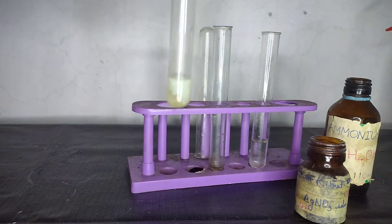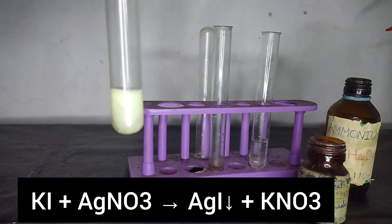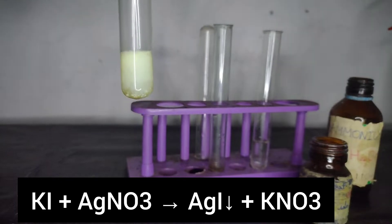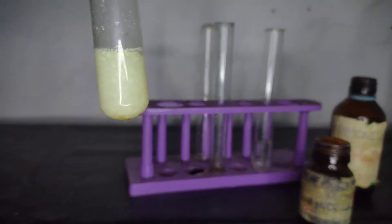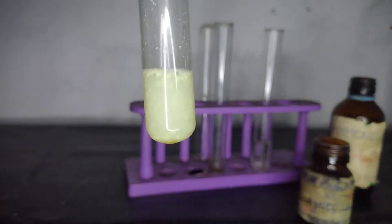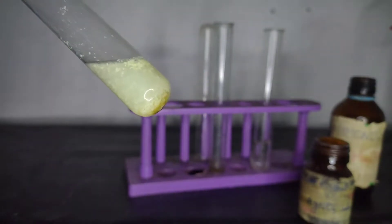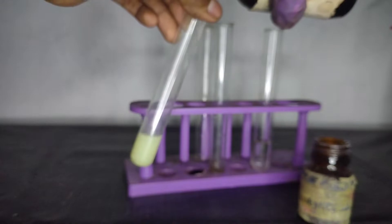On adding silver nitrate, you can see that there is the formation of a yellow precipitate. It is much yellower than the silver bromide and also it is insoluble in ammonium hydroxide.